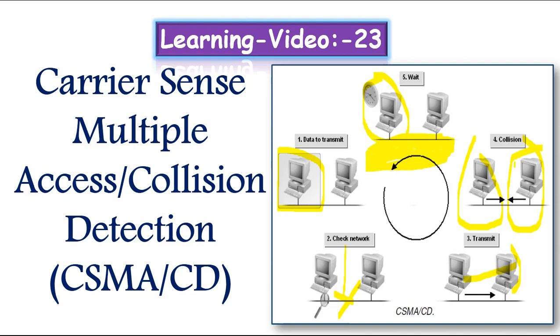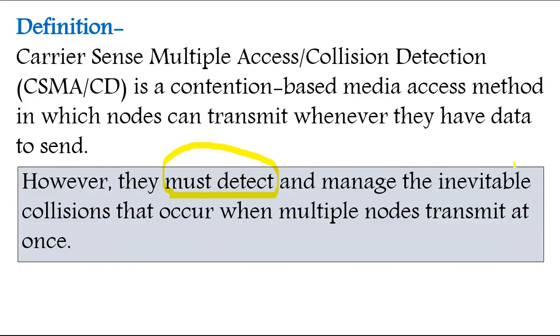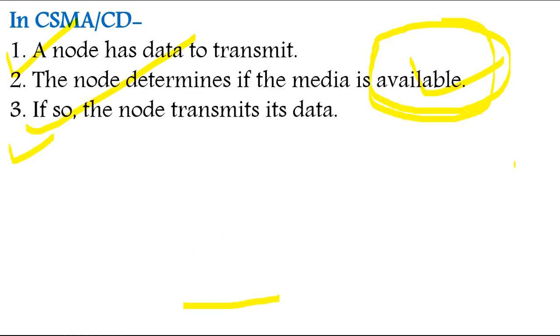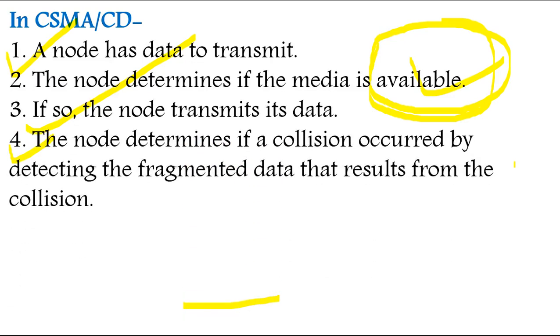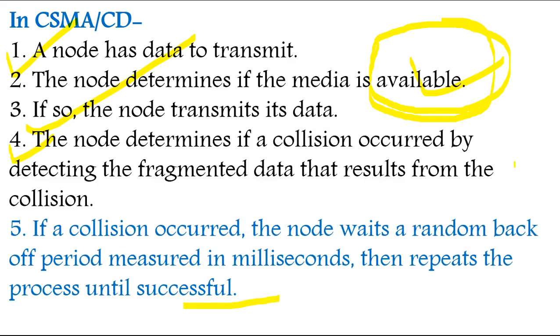I hope the idea is very clear. The process is very clear to you. There are five steps: first, they will check media availability; second, if collision happens, they will retransmit data until it is successful.